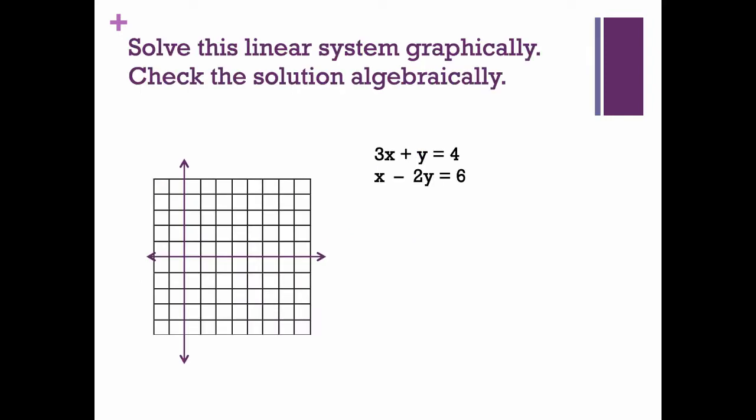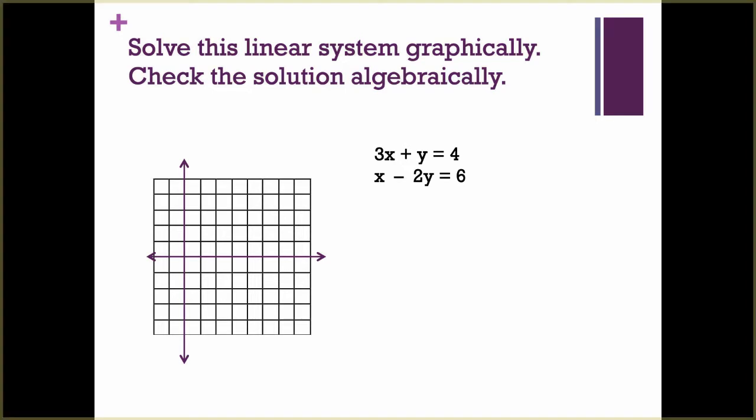Here we have solved the linear system graphically, and then it says to check the solution algebraically. We have 3x plus y equals 4, and we have x minus 2y equals 6. If it makes it easier for you to graph, put them into slope-intercept form. If you can graph from intercepts, you can use the intercepts as well.